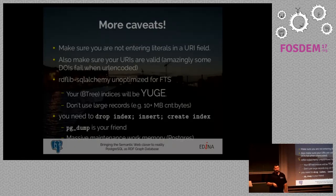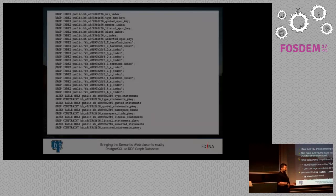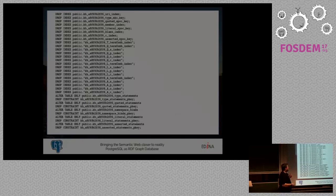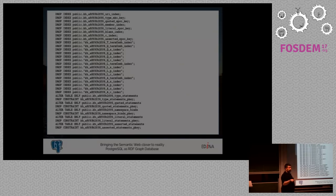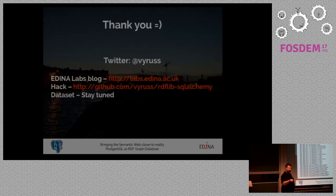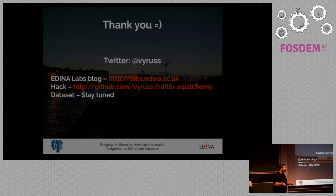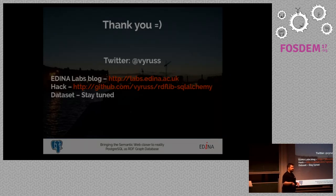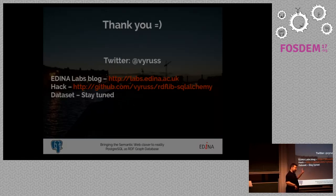You need to drop indexes before inserting, which makes things more complicated if you have to restart — because to select all your publishers and persons you need an index, otherwise the operation will never finish. PGDump is your friend: when all indexes have been created, do a PGDump to get all the drop and create statements so you can do it at will. Also make sure you have enough maintenance_work_mem, because trying to create a 100 GB index with 64 MB of maintenance work memory will not go well. Our EDINA developer blog is at labs.edina.ac.uk, and the hack will go up on GitHub on RDFLib SQLAlchemy soon.